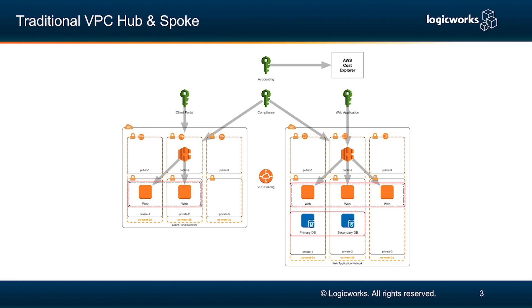There are a few different ways you could do that. One, you could use a traditional VPC hub-and-spoke model, where you have different VPCs that govern your applications, and then you just have IAM roles and IAM permissions that have access to each environment. On the left side, we have a simple client portal network that just has some web instances — the client portal team has IAM access to it, the compliance team has IAM access to it, and nobody else. On the right side you see your web application network, where the web application team has access and the compliance team has access. Meanwhile, the accounting team has access to AWS Cost Explorer or any other third-party tool you would use to manage your cost optimization.